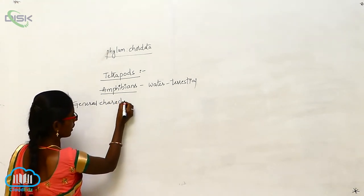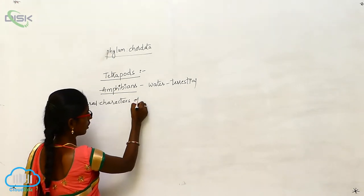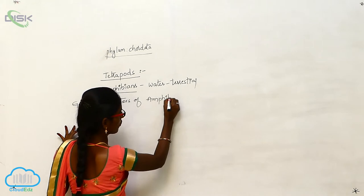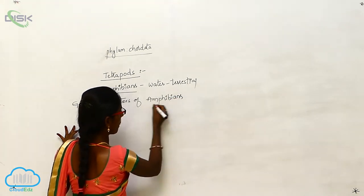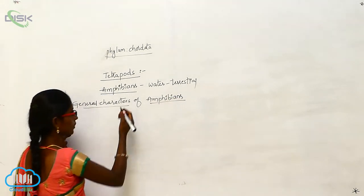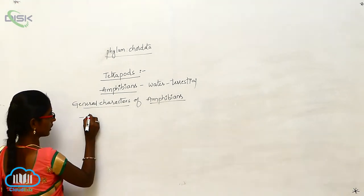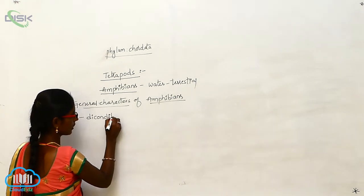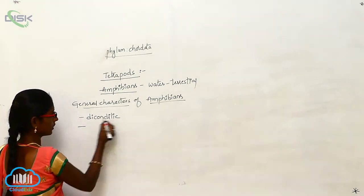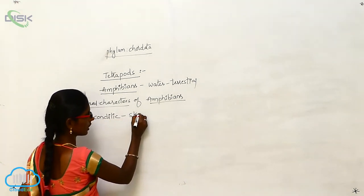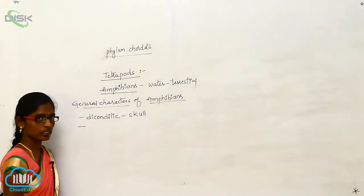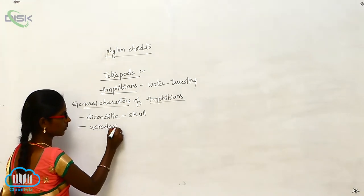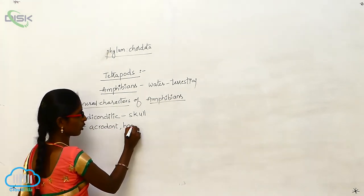General characters of amphibians. So skull is dicondylic. Dicondylic. And dicondylic skull is present. And teeth are acrodont and homodont.